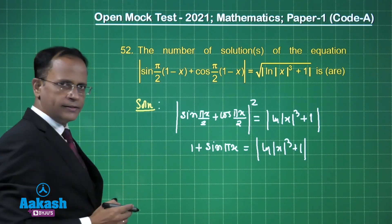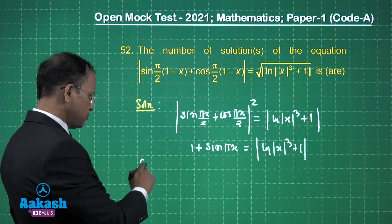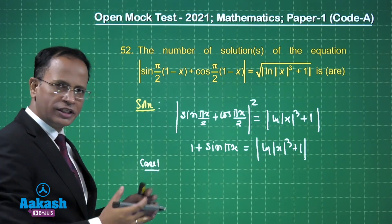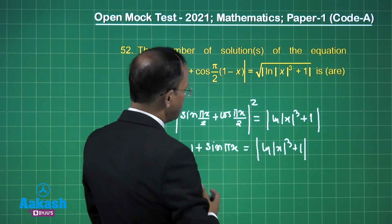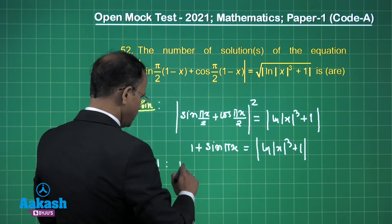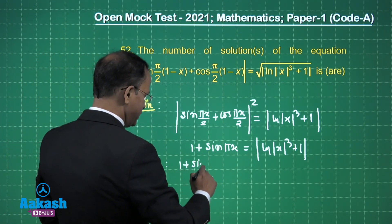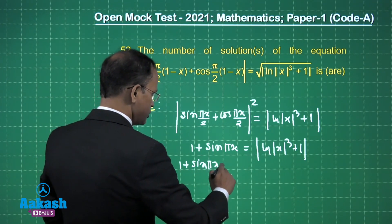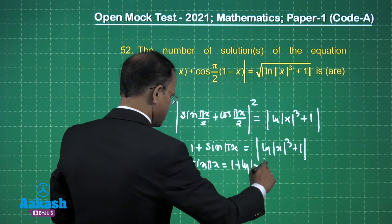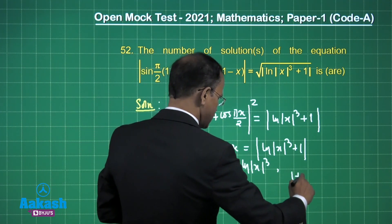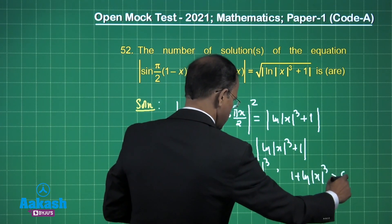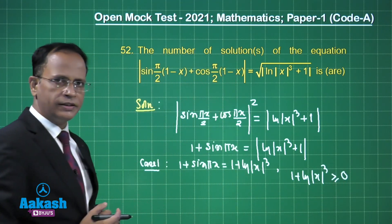We have two cases. Case 1: we take 1 + sin(πx) equal to 1 + ln|x³|, which simplifies to 1 + ln(x cube) where we require 1 + ln(x³) ≥ 0.